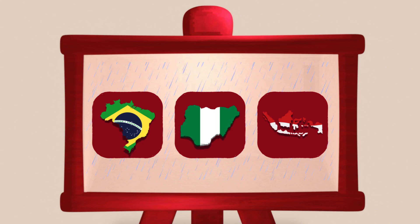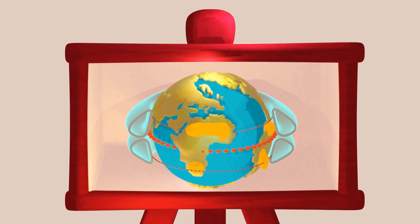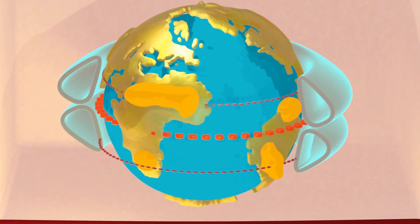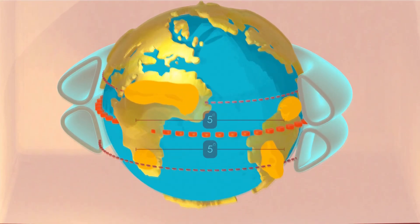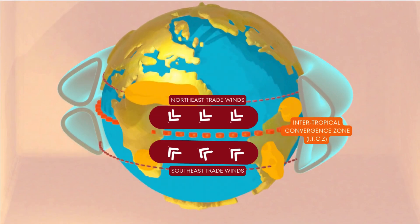The ITCZ is a place of low pressure that circles the Earth near the equator, usually between 5 degrees north and 5 degrees south, but it can move north and south within the seasons. It is where the north-east trade winds from the northern hemisphere meet the south-east trade winds from the southern hemisphere.